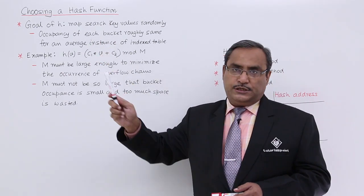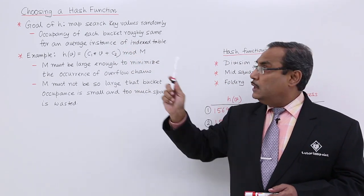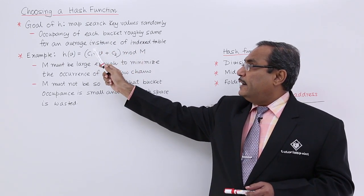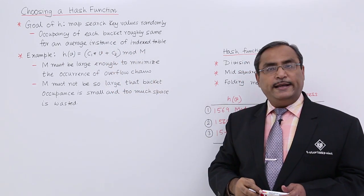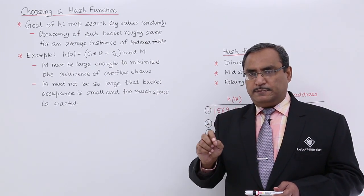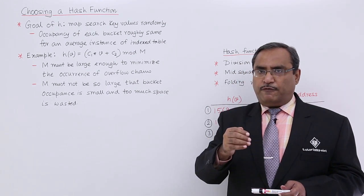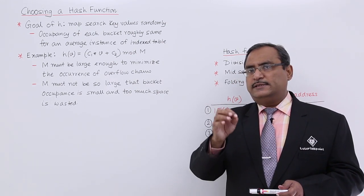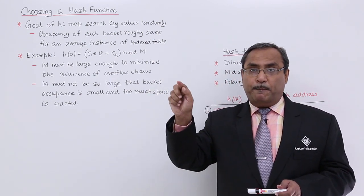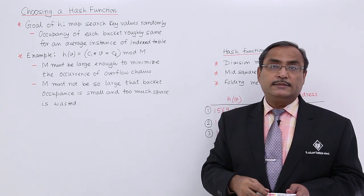Goal of h: map search key values randomly, occupancy of each bucket roughly same for an average instance of indexed table. That means this hash function must be chosen in such a way that the probability of occurrence of a certain search key value v which will be mapped on the respective buckets, the probability for each and every bucket must remain the same.